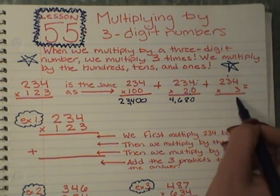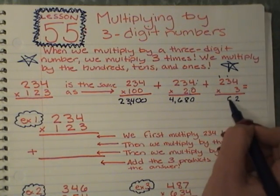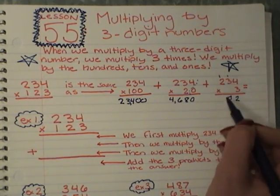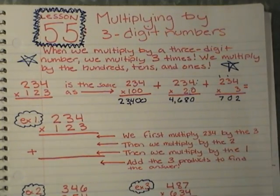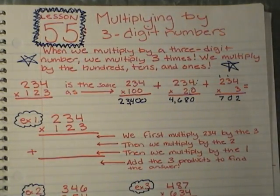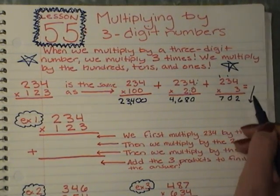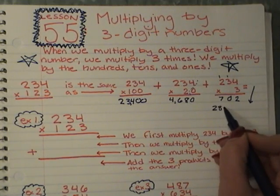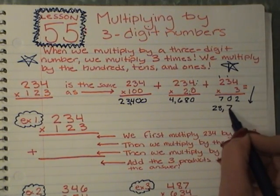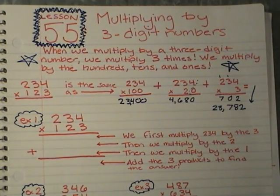And lastly, 3 times 4 is 12, 3 times 3 is 9, plus 1 is 10, 3 times 2 is 6, plus 1 is 7. So then, you need to add up all of these numbers, and I've already added them up, but if you were to line them all up, you would get 28,782. And that is our grand total.